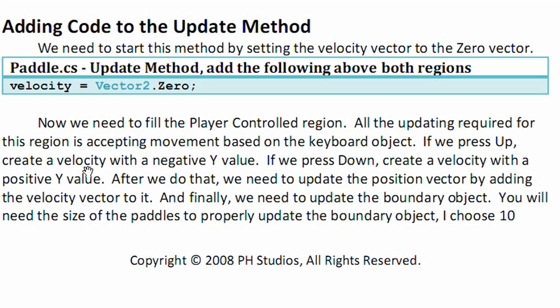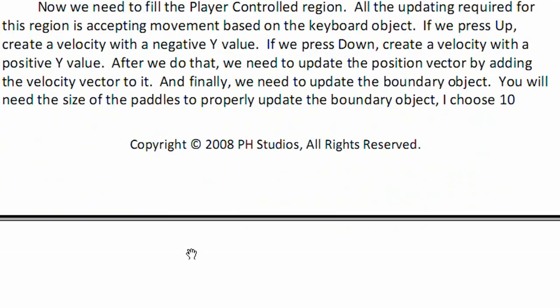After we do that, we need to update the position vector by adding the velocity vector to it. Next game we will add acceleration — remember that acceleration updates velocity, then velocity updates position. And finally, we need to update the boundary object according to the position and the size of our paddle, which I chose as 10 pixels wide by 50 pixels tall. Since we update the position inside the regions, we need to update the boundary object accordingly.